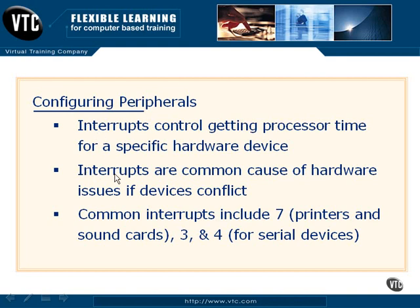If you assign duplicate interrupts to two different devices, the CPU is not going to know which device to give attention to. A common example of this is using a serial mouse configured on interrupt 3. If you also have a serial modem configured on interrupt 3, then when you use your mouse to access the internet, either your mouse or your modem is going to stop working, because your CPU doesn't know which device to give higher priority to. So it's always pretty handy to make sure that your interrupts are configured properly.